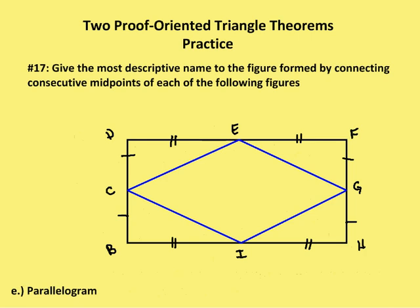Next figure is a parallelogram. I have marked up the diagram again. I can say that DE and EF are congruent, and HI and IB are congruent. So all four of those segments are congruent because opposite sides of a parallelogram are congruent. DC, CB, FG, and GH are all congruent because they are each half of congruent sides.